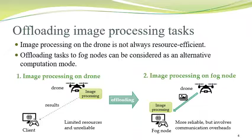Considering that, another computation mode — offloading tasks to a fog node — can be considered. In the image processing on drone case, pictures taken on the drone can be processed on the drone. Meanwhile, if we offload the process to any node in the fog computing infrastructure, the image taken on the drone is shipped to the fog node and the image processing runs there, on more reliable resources. At the same time, we also need to care about the communication overhead, because the drone needs to send the data to the fog node.